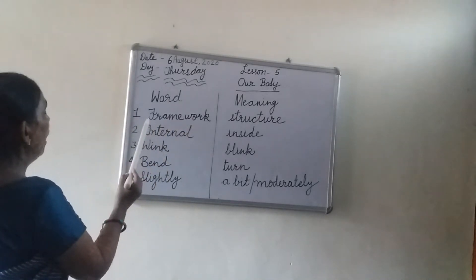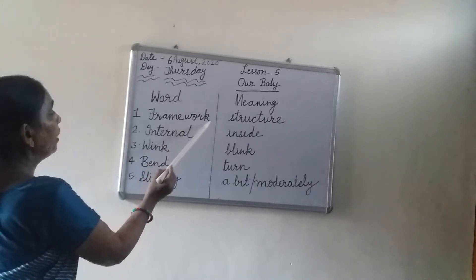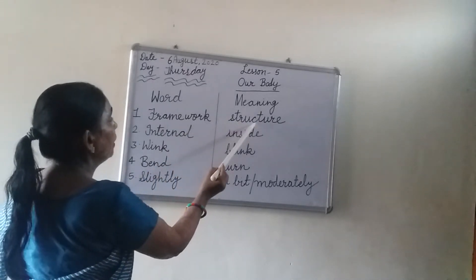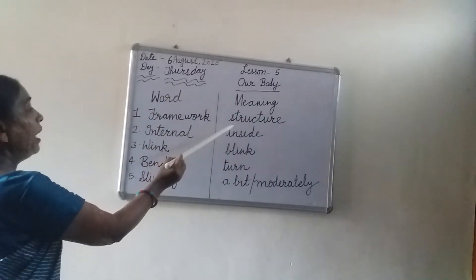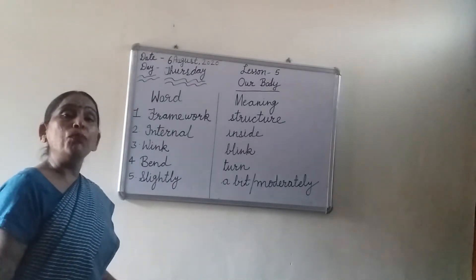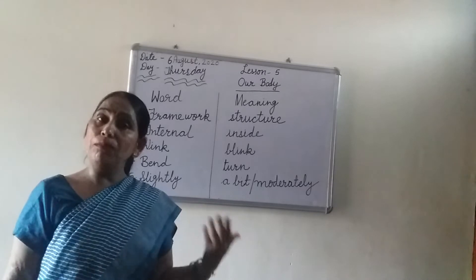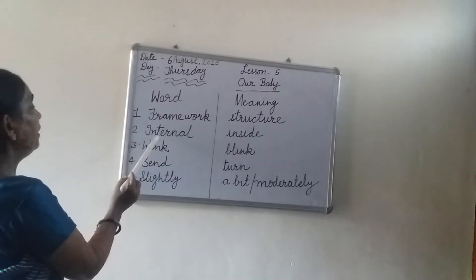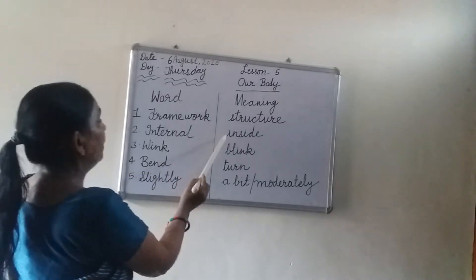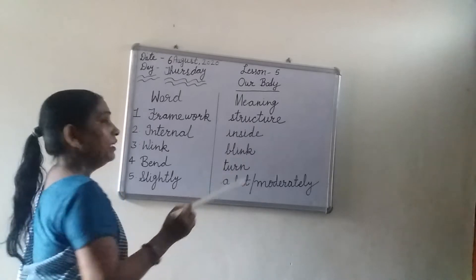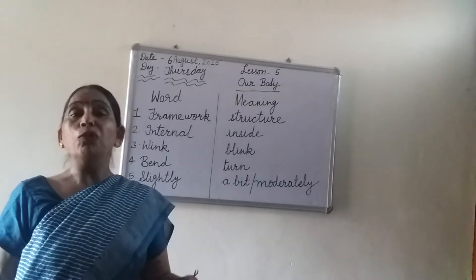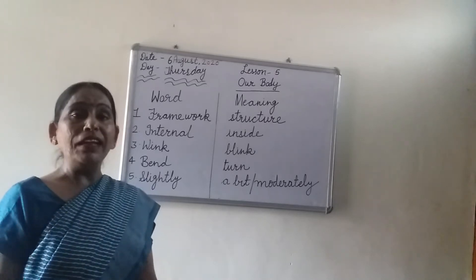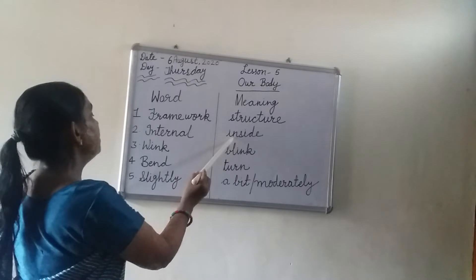First word हमारा क्या है? Framework — F-R-A-M-E-W-O-R-K. Framework का meaning क्या है? Structure — S-T-R-U-C-T-U-R-E. जैसे हमारे body में जो bones हैं, उसके framework को skeleton बोलते हैं. Second word क्या है हमारा? Internal — I-N-T-E-R-N-A-L. Meaning: inside — I-N-S-I-D-E. जैसे हमारे heart, kidney, lungs — यह हमारे internal organs हैं, जो हमारी body के अंदर हैं.